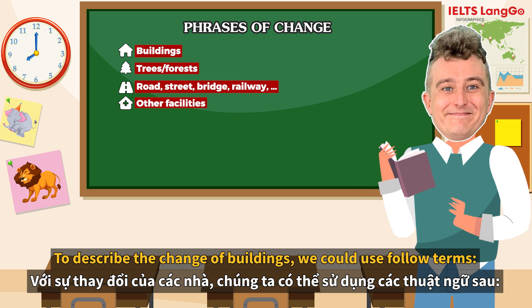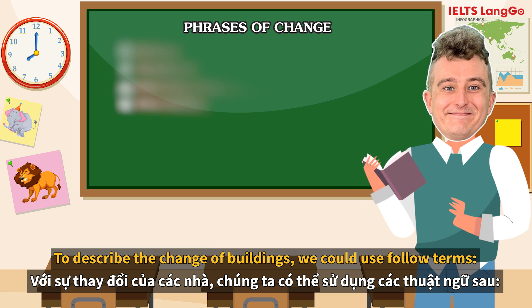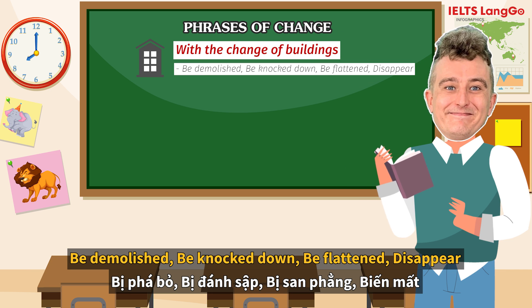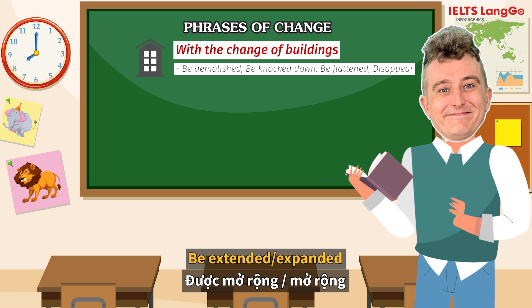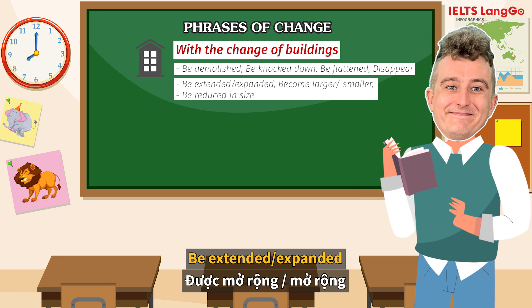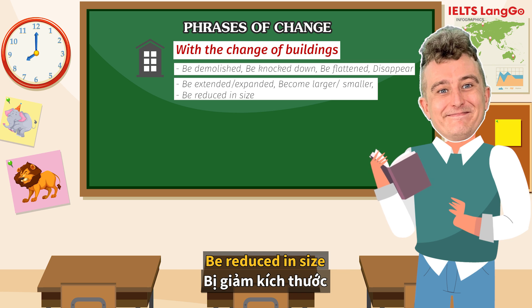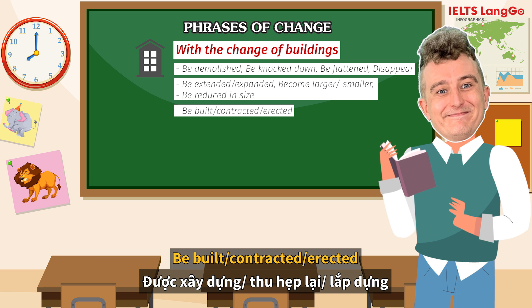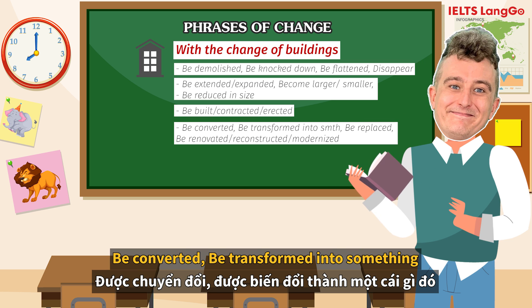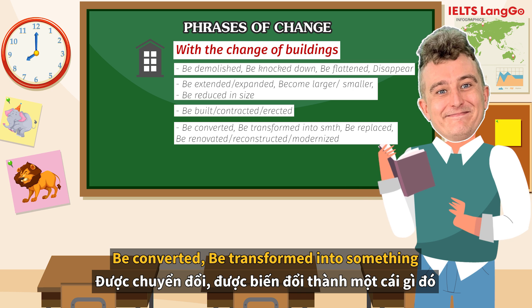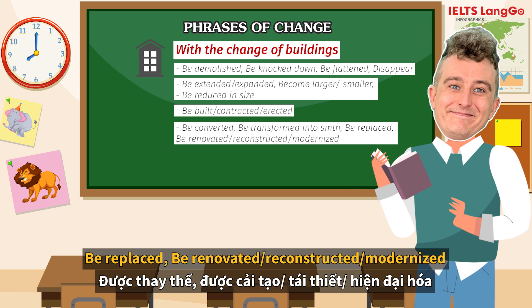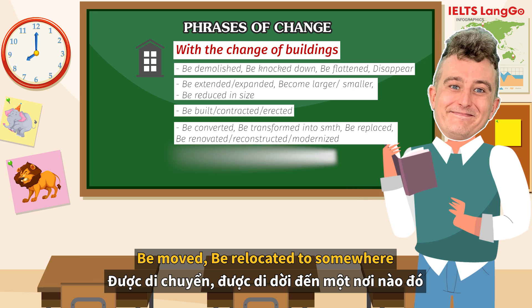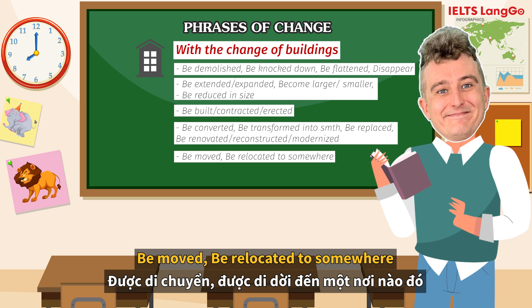To describe a change to buildings, we could use the following terms: to be demolished, knocked down, flattened, or to disappear; to be extended or expanded; to become larger or smaller; to be reduced in size; to be built, contracted, or erected; to be converted or transformed into something; to be replaced, renovated, reconstructed, or modernized; to be moved or relocated somewhere.